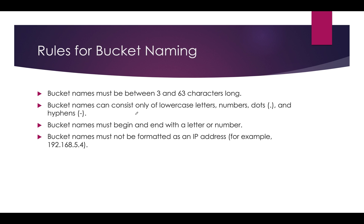There are specific rules for bucket naming. The bucket name must be between 3 and 63 characters long. Bucket names can consist only of lowercase letters, numbers, dots, and hyphens — only these four are allowed; uppercase letters are not allowed. Bucket names must begin and end with a letter or a number — either an alphabet or a number. One more restriction: bucket names must not be formatted as an IP address. For example, something like 192.168.x.x format is not valid even though numbers and dots are individually allowed.